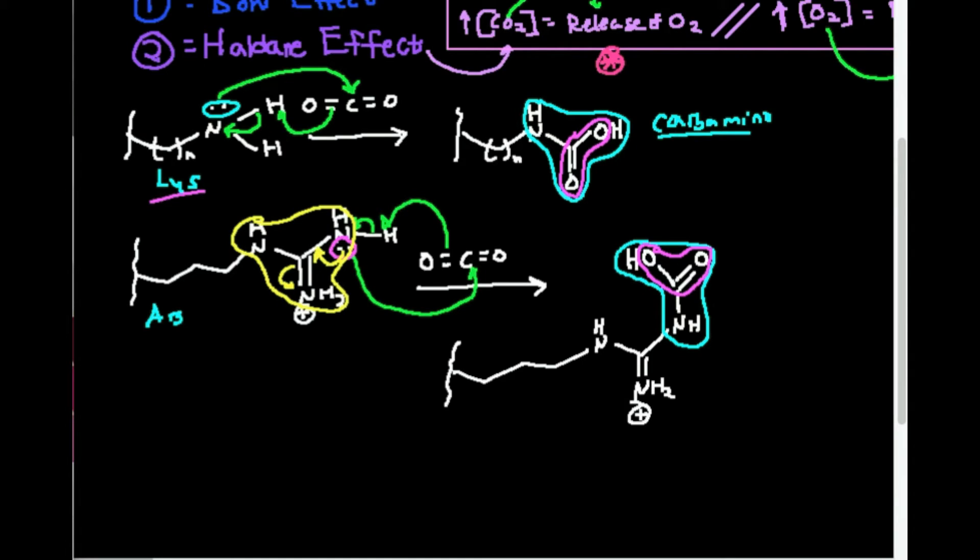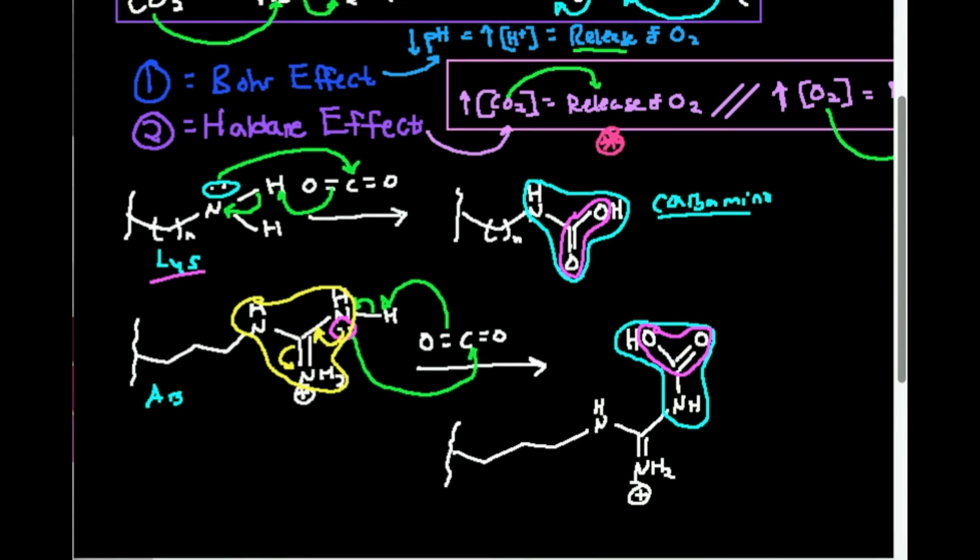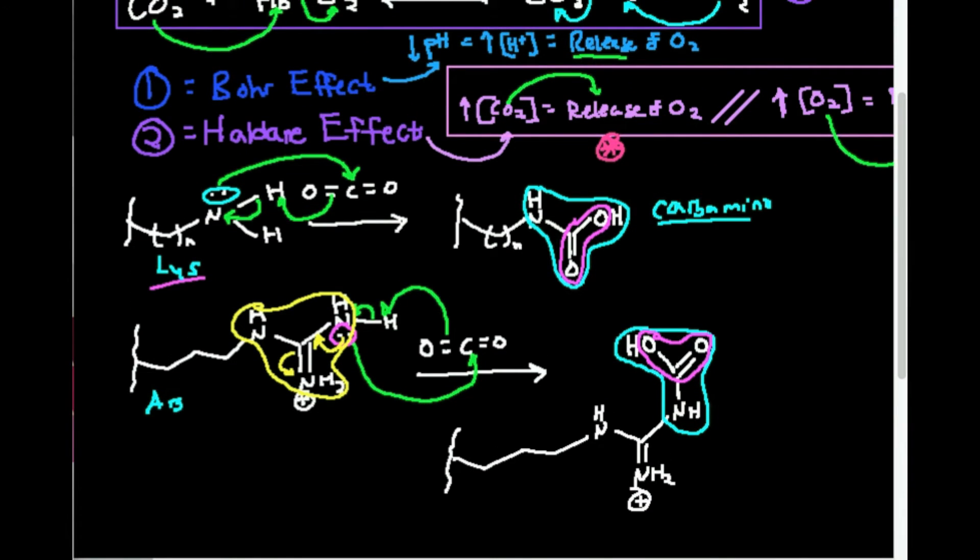So this lone pair could actually be delocalized around this entire guanidinium group of arginine. So that makes it a lot less reactive. And so this second reaction with arginine doesn't happen to a very large extent compared to lysine, but it will happen to some extent. And overall, this is called the Haldane effect. This is where CO2 can bind to residues on hemoglobin in the form of these carb amino groups.